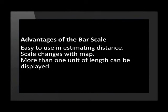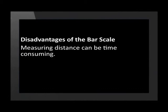Let's go through the advantages and disadvantages of using this scale. It is easy to estimate distance or length on a map. The scale is reduced or enlarged with the map when it is reduced or enlarged. More than one unit of length can be displayed on the same scale. The most prominent disadvantage of a bar scale is that if you have to measure twisty roads, it can be very time consuming. It is more suitable for measuring as the crow flies — in other words, straight distances.